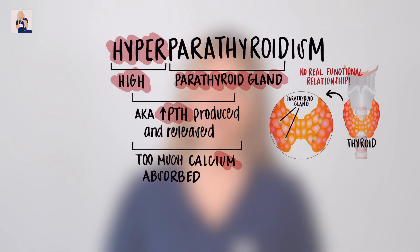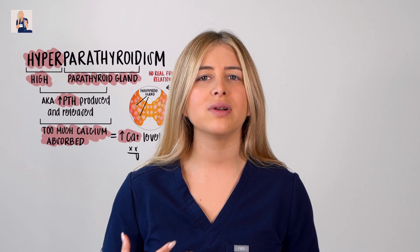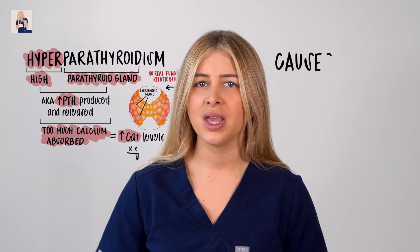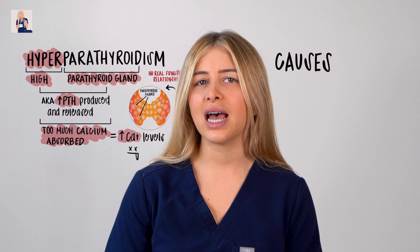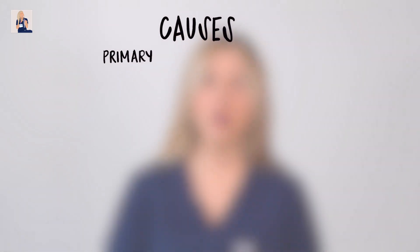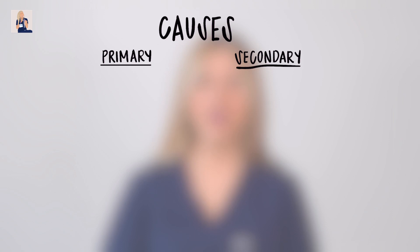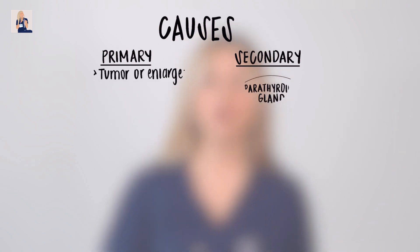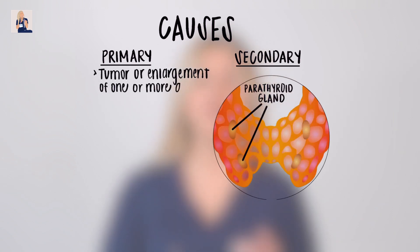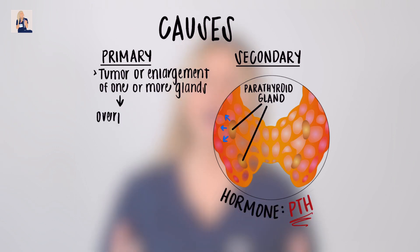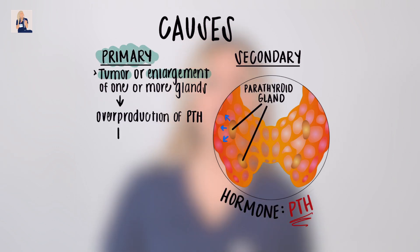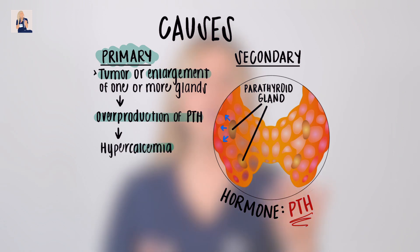Now, what causes hyperparathyroidism? Why would someone be diagnosed with this condition? There are two types: primary and secondary. In primary hyperparathyroidism, a tumor or enlargement of one or more of the parathyroid glands causes that overproduction of PTH, which then causes high calcium levels in the blood, resulting in a variety of health problems.